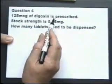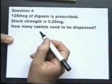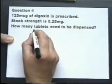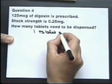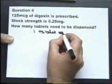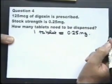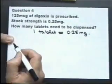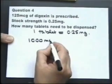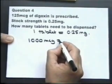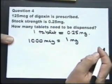125 micrograms of digoxin is prescribed; the stock strength is 0.25 of a milligram. One tablet will contain this amount of digoxin. We need to consider that this is in micrograms, so the first thing we need to think about is there are 1000 micrograms in one milligram.